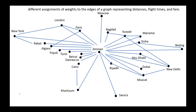If our problem involves fares, then we can assign fares to the edges between the cities. For example, Amman–Sana'a 900 J.D., Amman–Baghdad 300 J.D., etc.